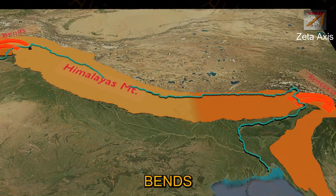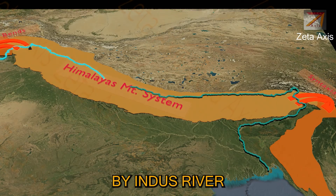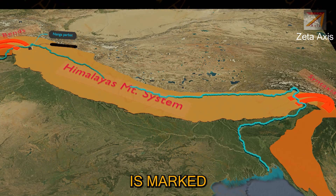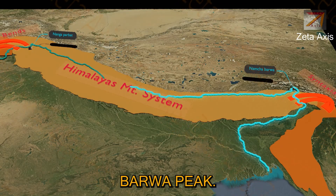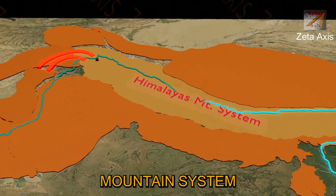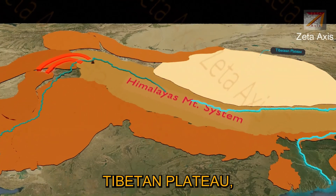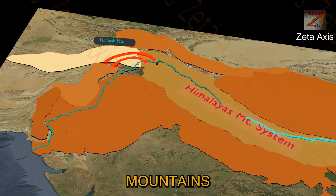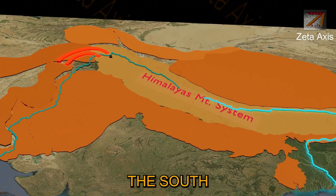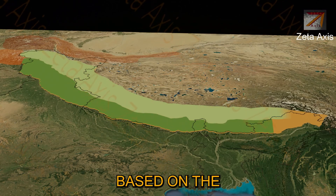Only the mountains between the syntaxial bends are called the Himalayan mountain system. The western edge is marked by the Indus river near Nanga Parvata peak, and the eastern edge is marked by the Brahmaputra river near Namchabarwa peak. In the north, the Himalayan mountain system is bounded by the Pamir Knot and Kunlun mountains; to the northeast is the Tibetan plateau; on the west are the Hindu Kush and Suleiman mountains; on the east are the Purwanchal Himalayas; and to the south are the Indo-Gangetic and Brahmaputra plains.